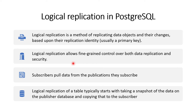In PostgreSQL when we talk about logical replication we talk about two terms: one is the subscriber and another is the publisher. The node where the application connects is known as the publisher node, and wherever the logical replication is replicating the data is known as the subscriber. The publisher is where changes are actually happening, and the subscriber is the one which accepts those changes.